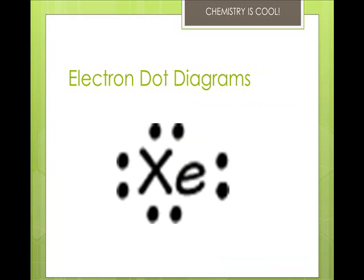Electron dot diagrams, which are also called Lewis dot diagrams, are a way of keeping track of the valence electrons. You'll write them by writing the symbol in the middle and then putting one dot for each valence electron around. You don't pair up any electrons until you have to, because remember it's that Aufbau rule.